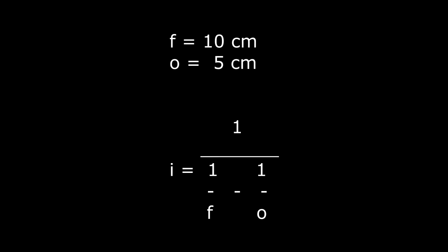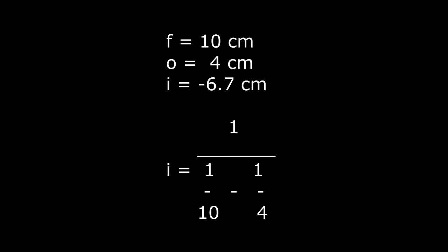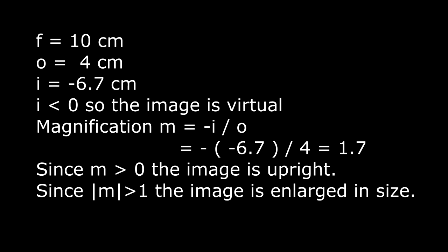For a numerical example, we take a focal length f equal to 10 cm and place an object at a distance o equal to 5 cm away from the lens. The thin lens equation gives i equal to minus 6.7 cm for the location of the image. The magnification, minus i over o, is 1.7. Since the image distance i is negative, we conclude that the image is virtual. Since the magnification M is positive, we conclude that the image is upright. And since the absolute value of the magnification is greater than 1, we conclude that the image is enlarged.